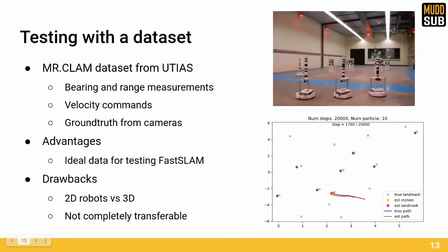Since the pandemic has limited our ability to work with the robot, our primary method of testing our implementation has been through existing datasets. We used the Multi-Robot Cooperative Localization and Mapping, or Mr. CLAM dataset, published online by the University of Toronto Institute for Aerospace Studies, UTIAS, which can be seen in the top image.